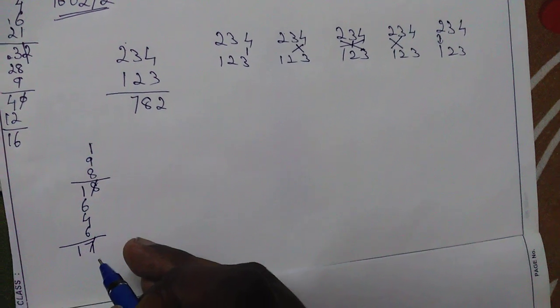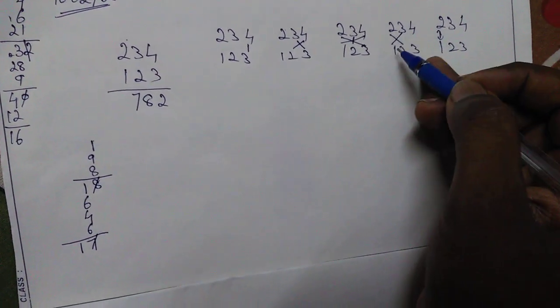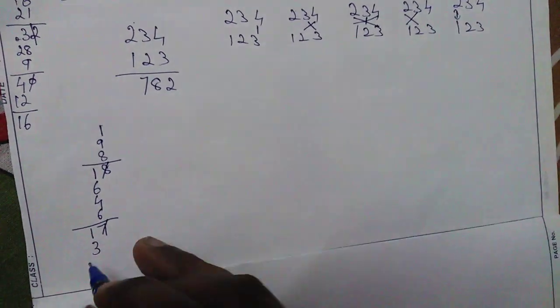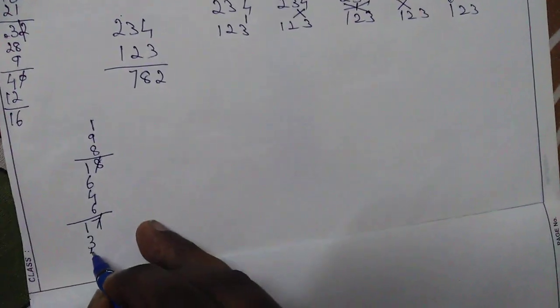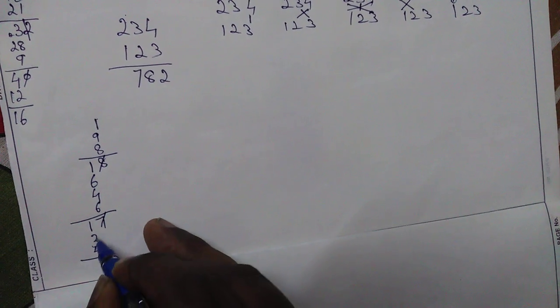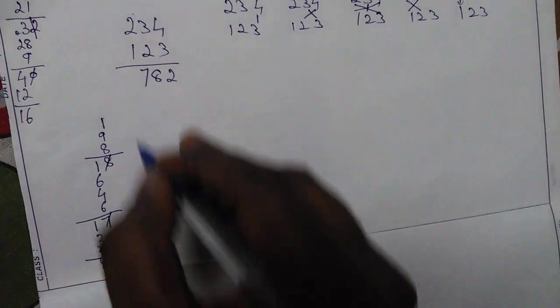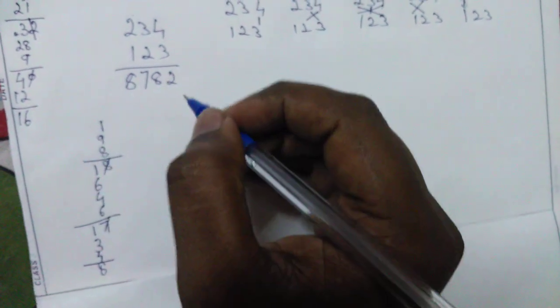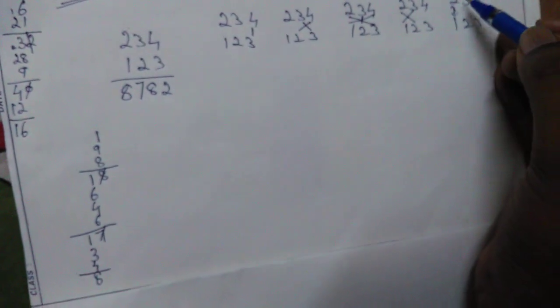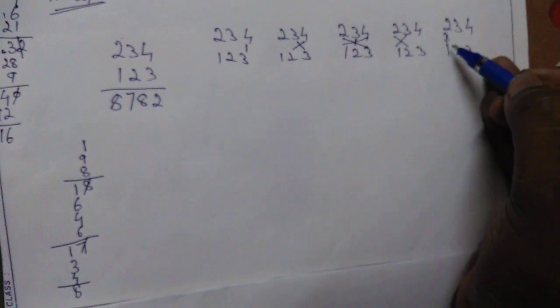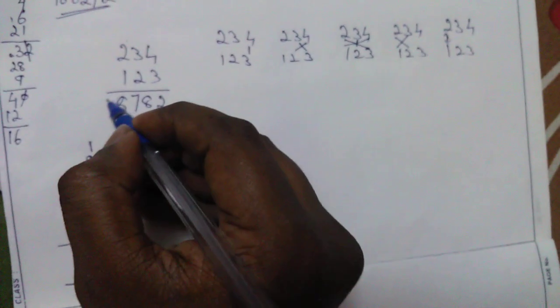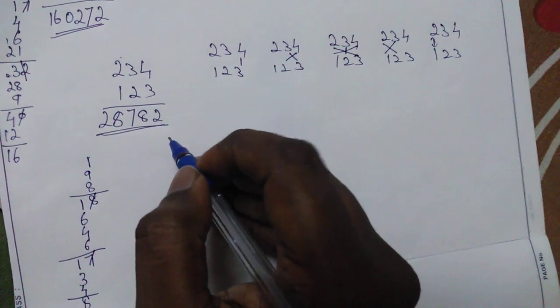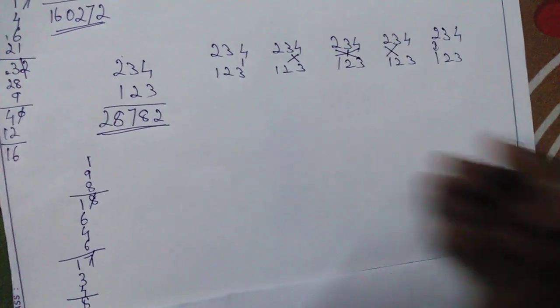Fourth step: 3 into 1 is 3, 2 into 2 is 4, plus 4 gives 8. Last method: 2 into 1 is 2. Let's put it here. So there is the answer for this one.